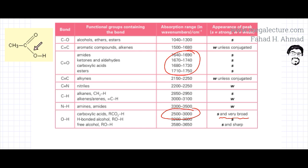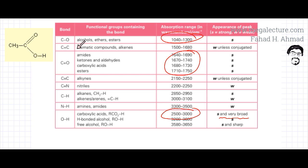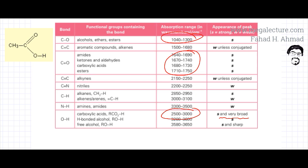The other bonds present in this molecule: the C–O single bond in alcohols, ethers, or esters gives a strong absorption at around 1,000 to 1,300. Then there's C–C single bond, which is not given in the data booklet. The CH bonds have absorption around 2,800 to 3,000, and it's going to be a strong absorption because we have single bonds — an alkane type — so CH bonds will have a strong absorption within this range.